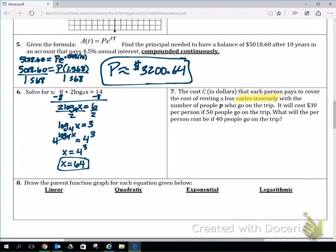So varies inversely, we have y equals k over x. If it cost me 30 bucks for 50 people, me and 49 of my closest friends to go, k equals 1500. So if I know k equals 1500, then I can rewrite my equation because I know what k equals. And then I said that my x value was number of people going on the trip, so if I'm only taking 39 of my closest friends, then there's only 40 of us going.